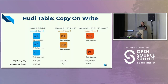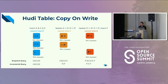Every time you ingest data, there's a merge operation happening where it combines the new data with the data that already exists on the Parquet file and creates a new version of that Parquet file. Because of this merge operation, it has a slightly higher write amplification. But on the query side, it has lower amplification for reading because you can read directly from the Parquet files.